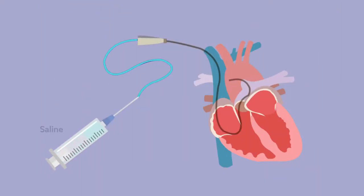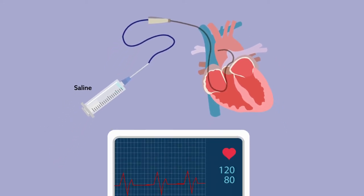In thermodilution, bursts of cold saline are injected into the heart, and the resulting temperature changes can be tracked to estimate cardiac output.